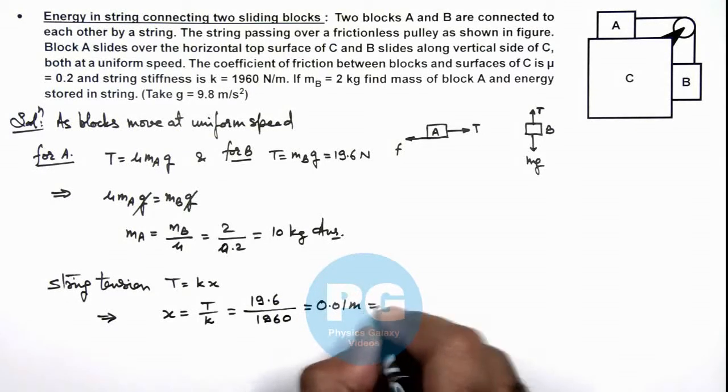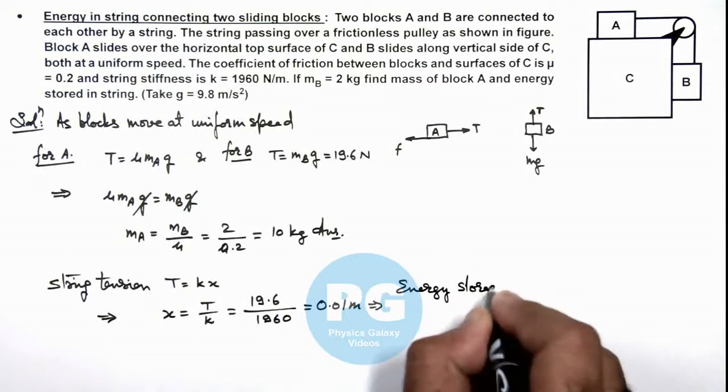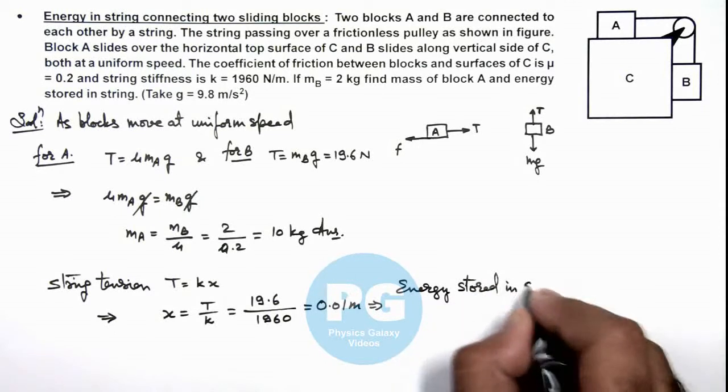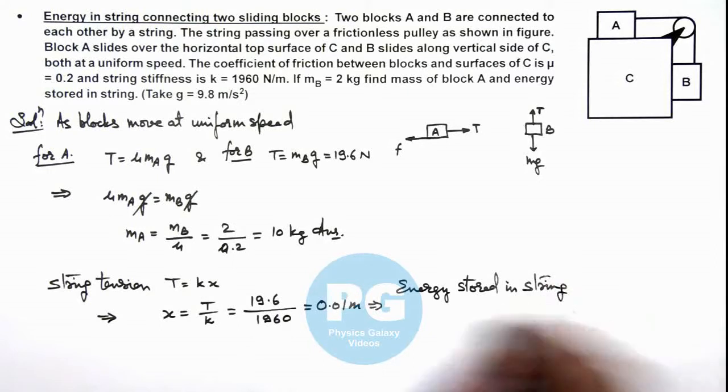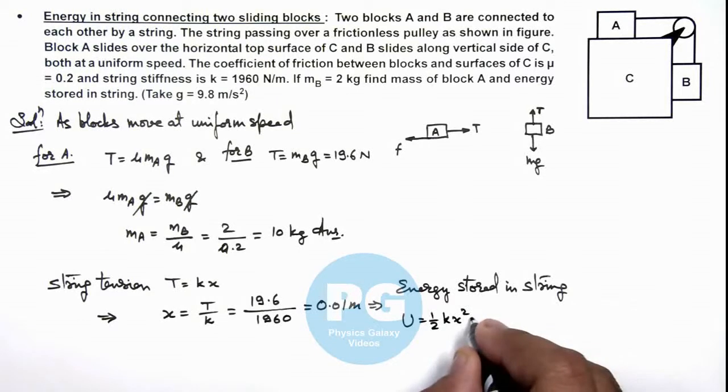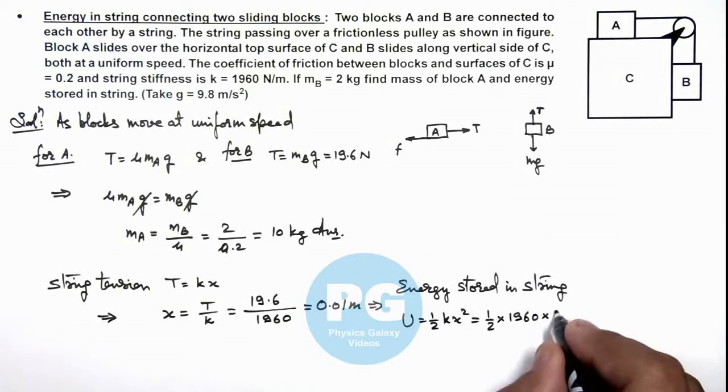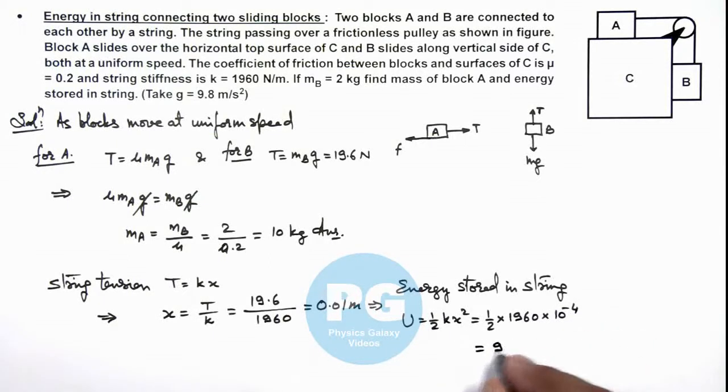And this implies if we calculate the energy stored in string, then energy stored in string can be given as ½kx². If we substitute the values, this is ½ multiplied by value of k is 1960 multiplied by 0.01 squared is 10 to power minus 4. Then simplifying this is giving us 9.8 into 10 to power minus 2 joules. That'll be the result of this problem for energy stored in the string.